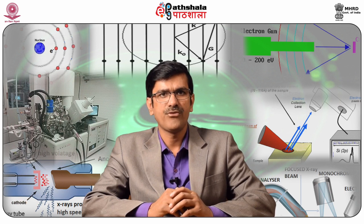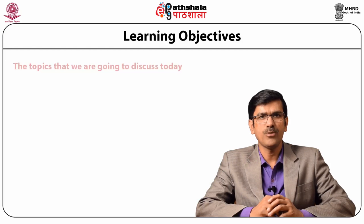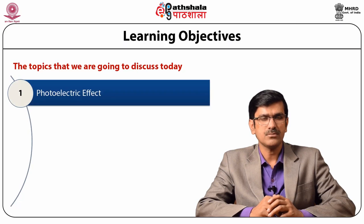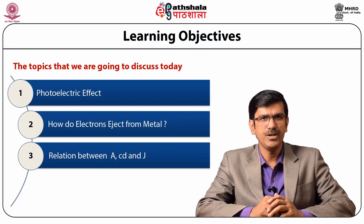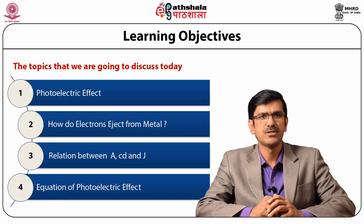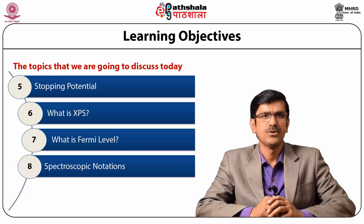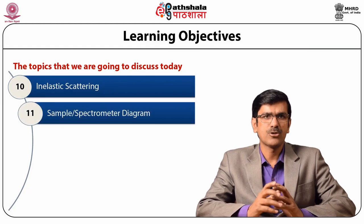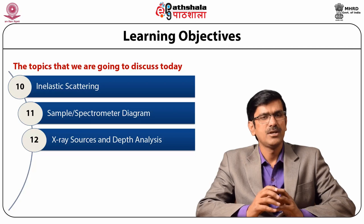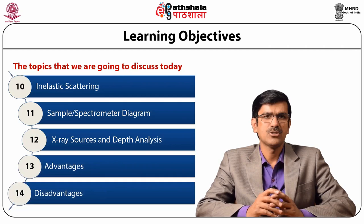This is under the paper of Surface Analytical Techniques 2. The outlines of the topics we are going to cover today include: the photoelectric effect, how electrons eject from metals, equations of photoelectric effect, stopping potential, what is XPS, what is Fermi level, spectroscopic notations, energy scale, inelastic scattering, sample spectrometer diagram, X-ray source, depth analysis, and finally the advantages and disadvantages of XPS.